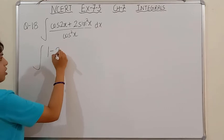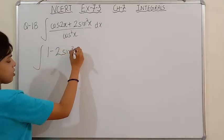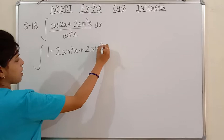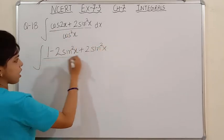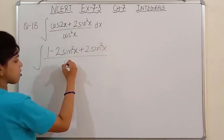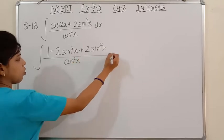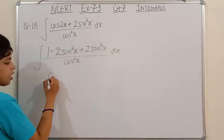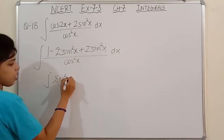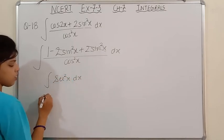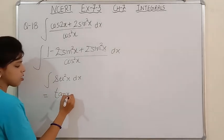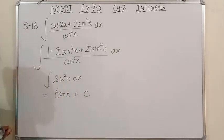The formula of cos 2x in the form of sin is: 1 minus 2sin²x. So it's very easy — just put the cos 2x formula. So substituting cos 2x = 1 minus 2sin²x, we get (1 - 2sin²x + 2sin²x) upon cos²x. The 2sin²x terms cancel, leaving 1 upon cos²x = sec²x dx. The integration of sec²x is tan x + C. This is our answer, please note down.